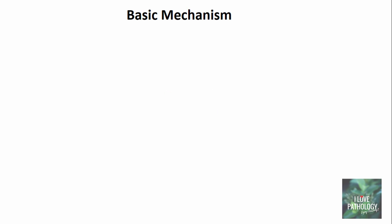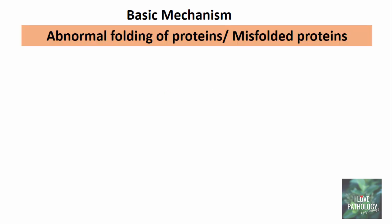The pathogenesis of amyloidosis — the basic mechanism — is abnormal folding of proteins, also referred to as misfolded proteins. To summarize: proteins are made up of chains of amino acids. These chains fold into three-dimensional structures, and the folding is very important for the function of these proteins. Sometimes after the formation of proteins, the folds might release or there will be abnormal folding, and these are called misfolded or abnormally folded proteins.